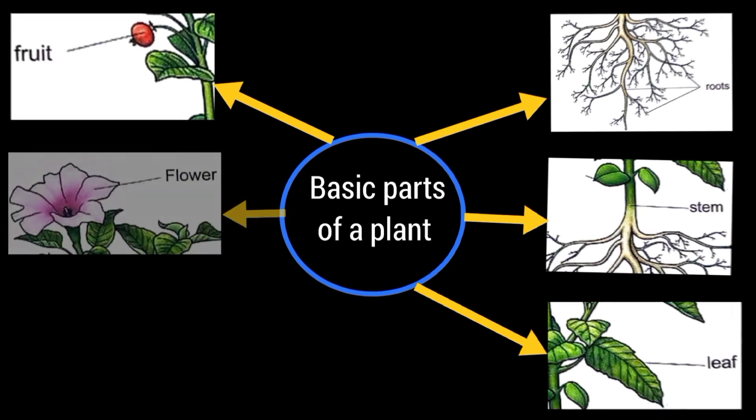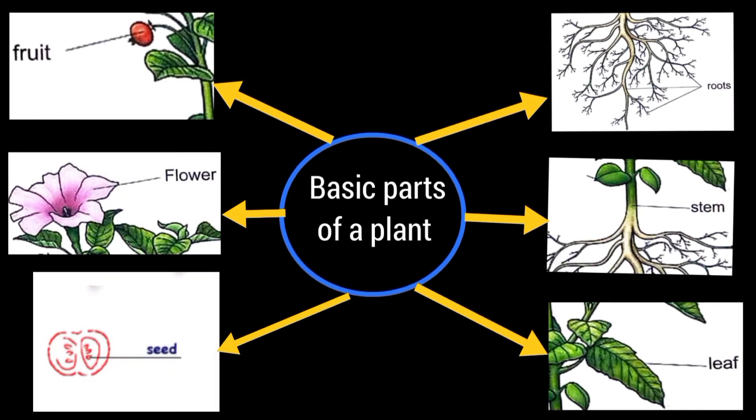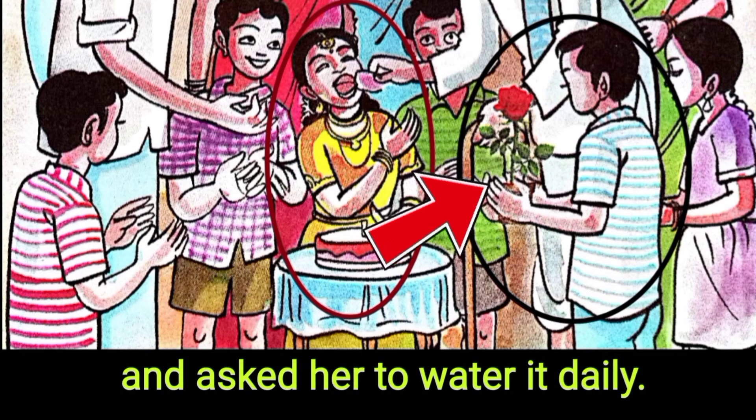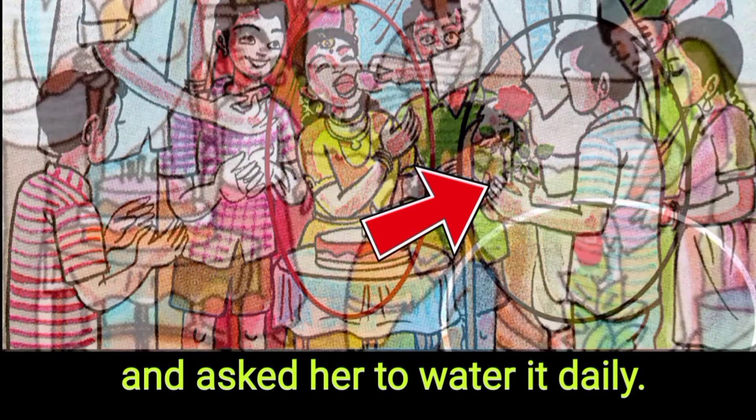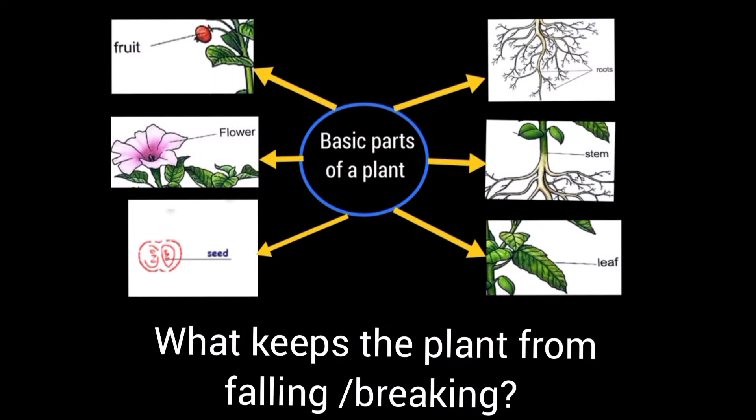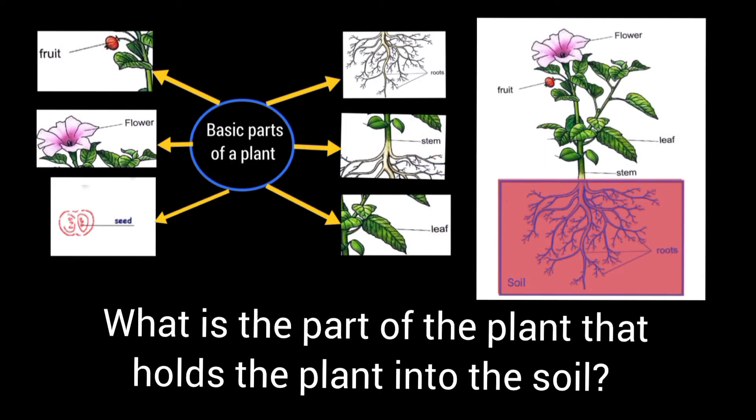Children, Ramya's friend gifted her a rose plant and asked her to water it daily. Children, if we water the plant daily, then how does the plant take water from the soil? What is the part of the plant that keeps it from falling or breaking? What is the part of the plant that holds the plant inside the soil?